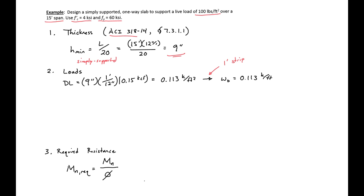We can do the same thing with our live load. We're given a live load of 100 pounds per square foot, which we convert to 0.1 kips per square foot. Taking this times 1 foot — our strip width — we get a distributed live load of 0.1 kips per foot.